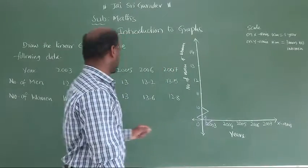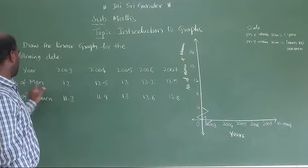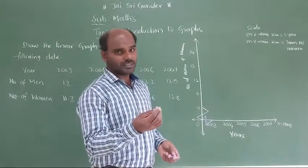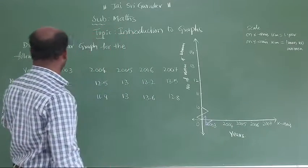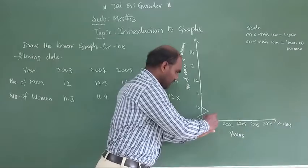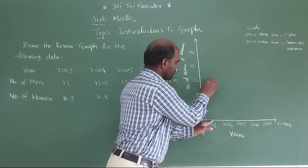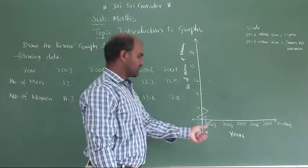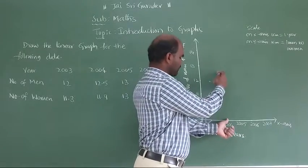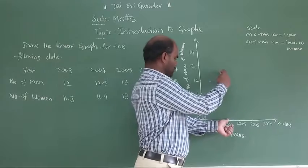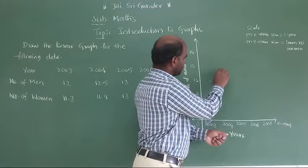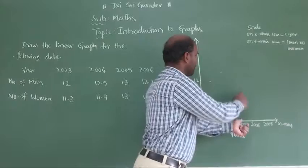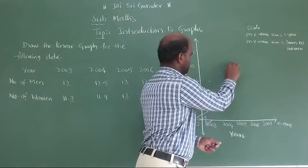First, 2003 has 12 men. Men's I am taking in purple color. 2003 will be at 12. Next is 2004, 12.5. 2004, 12.5 means between 12 and 13, the midpoint. Next is 2005, 13. 2005, 13.